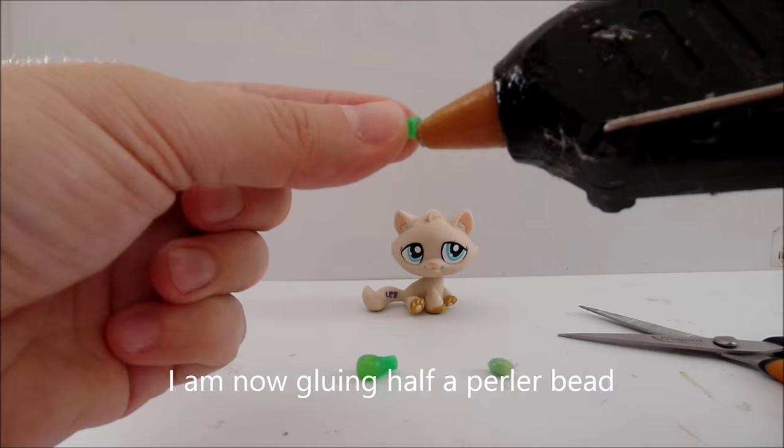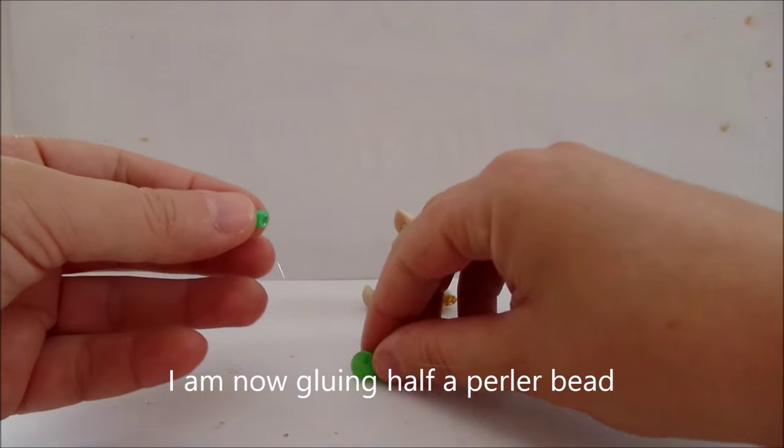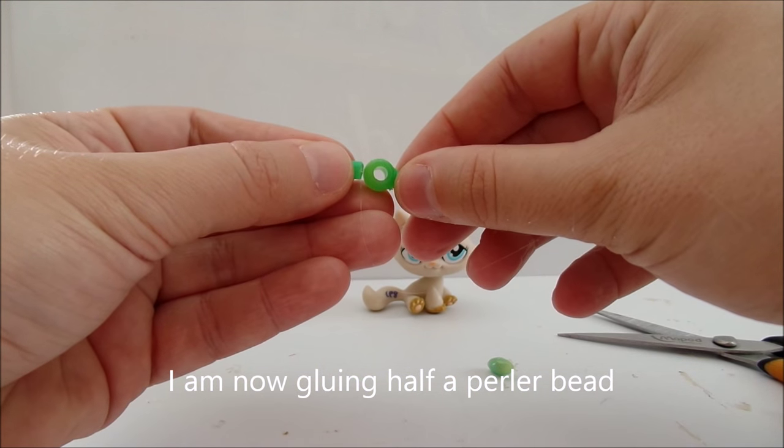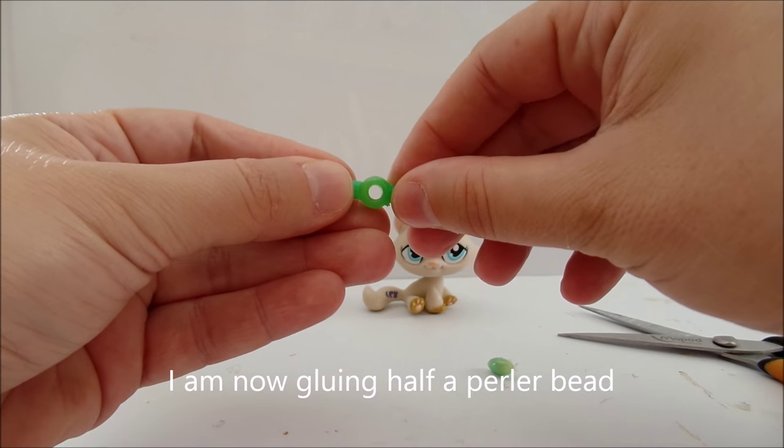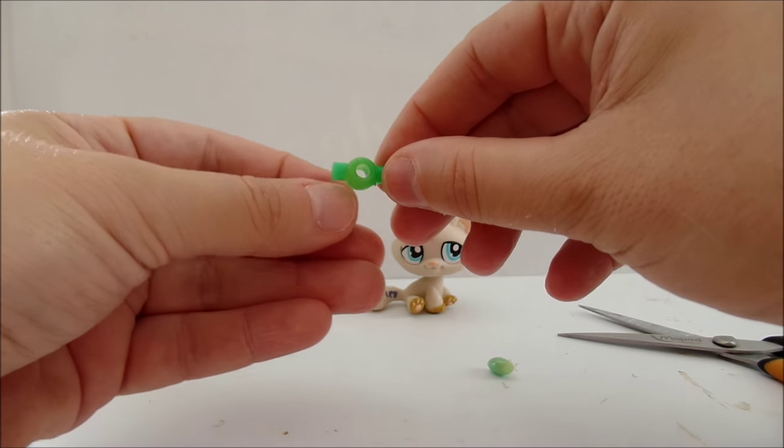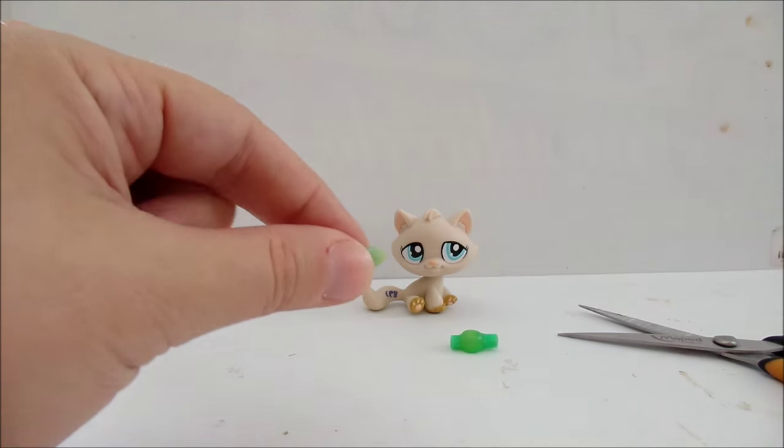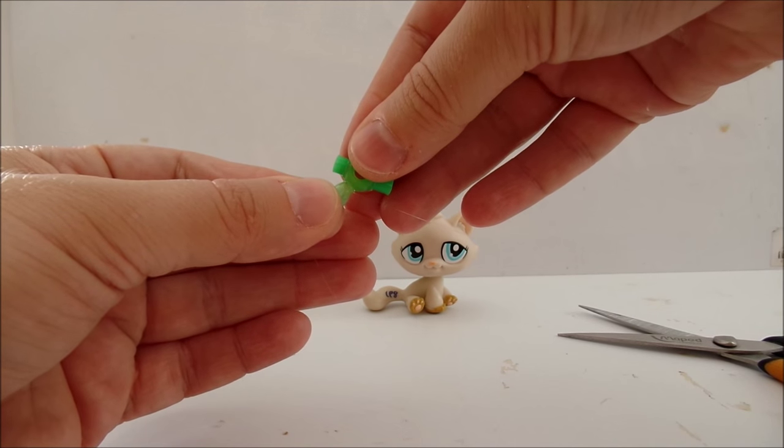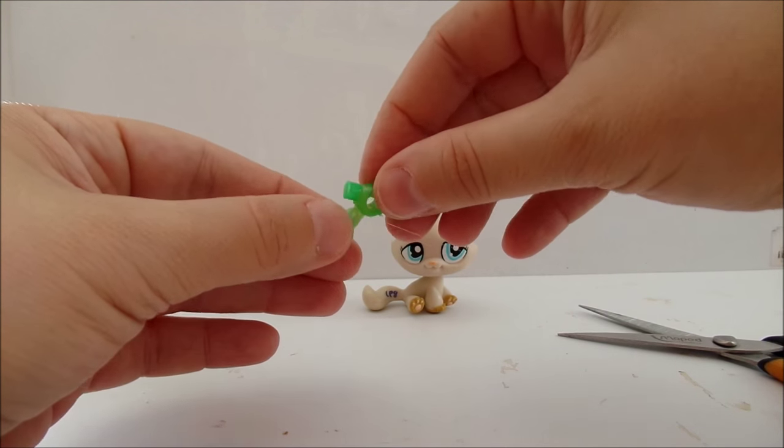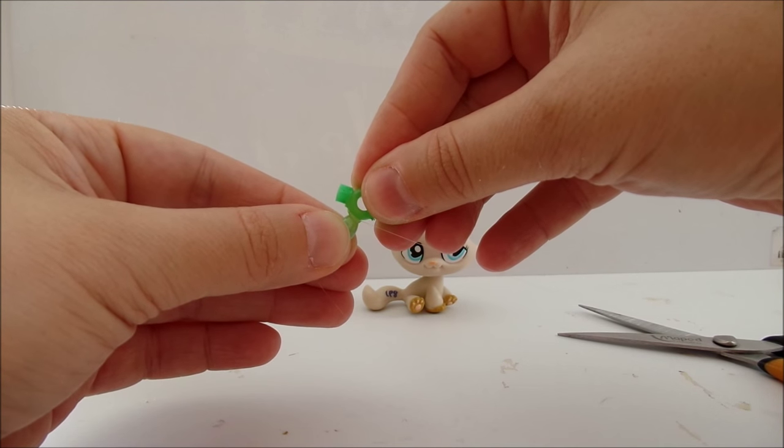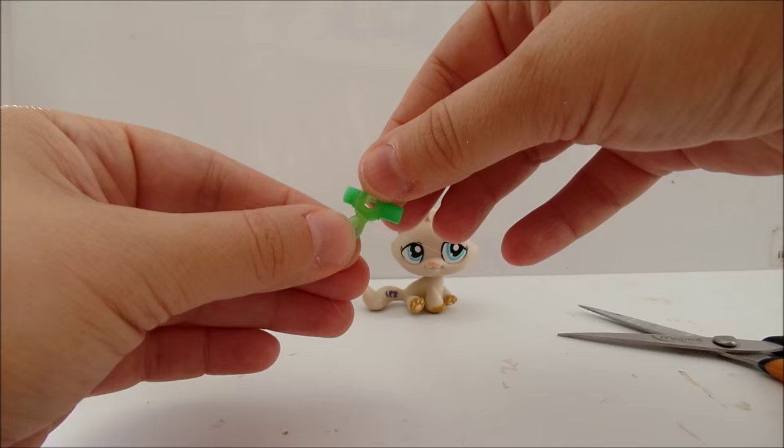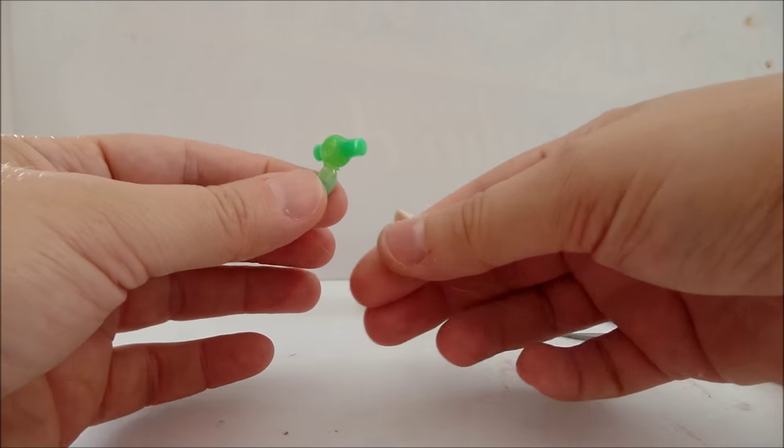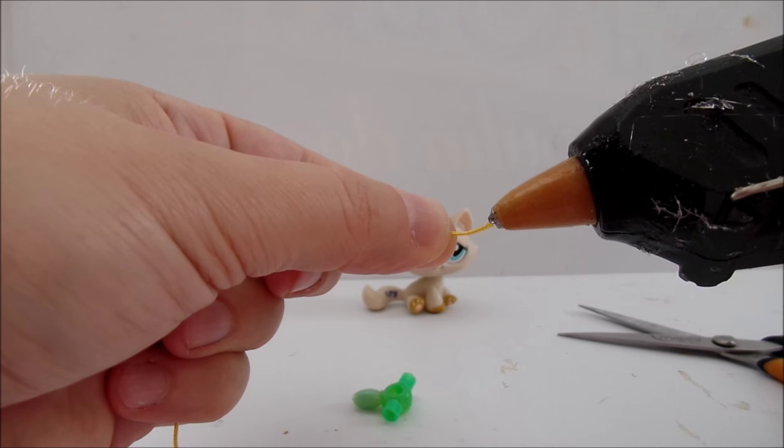Now glue the third bead at an angle. Glue the hand. Glue the cord.